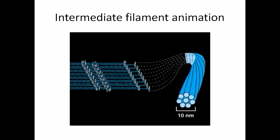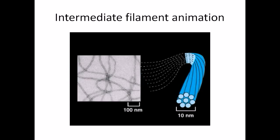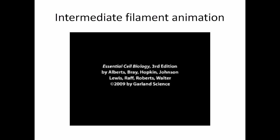An electron micrograph shows the appearance of intermediate filaments that have been assembled in a test tube. This was an animation about the intermediate filament. As you can see, the arrangement of the intermediate filament is typical in such a way that they can resist a huge tensile strength.